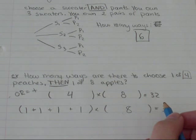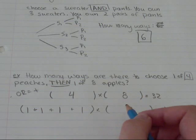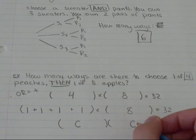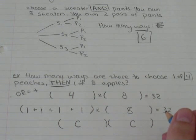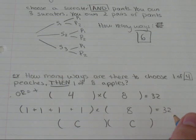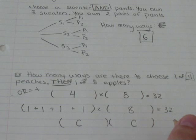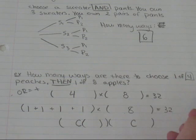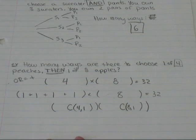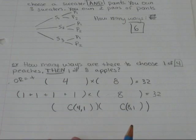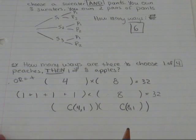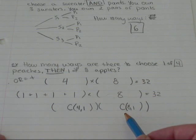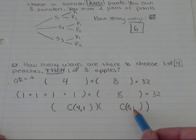You can also think of it as using this notation with choose. I wouldn't use permutations because it doesn't matter what order I'm picking my produce in. So I'm going to choose from four apples. Hi, everyone. Sorry, my memory card just died. What I was saying was that I'm going to choose, from my four peaches, I'm going to choose one. And from my eight apples, I'm going to choose one.